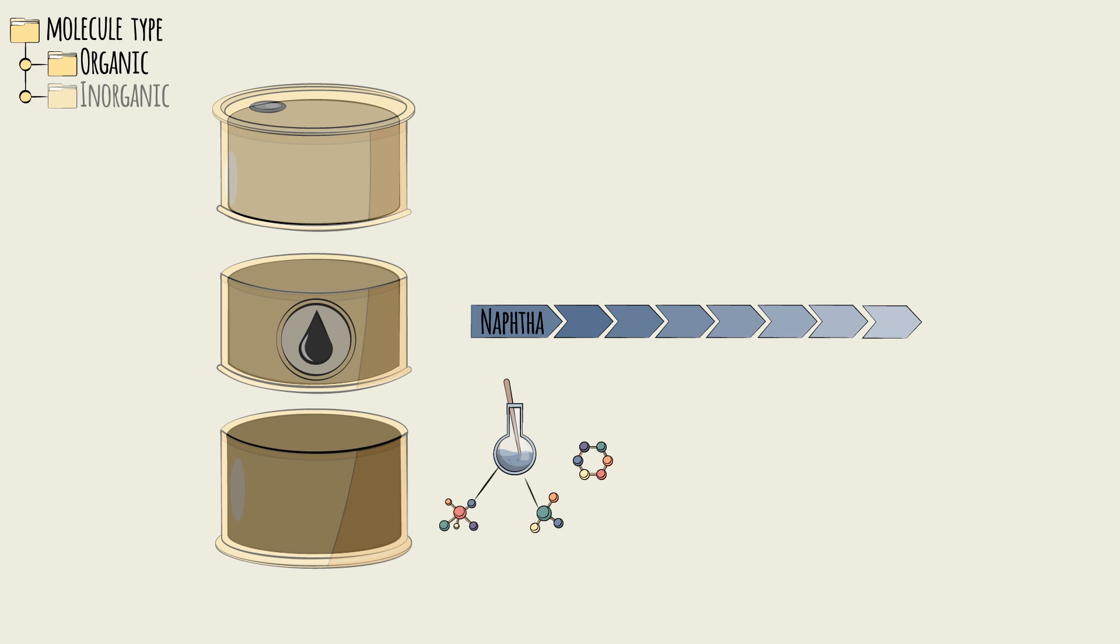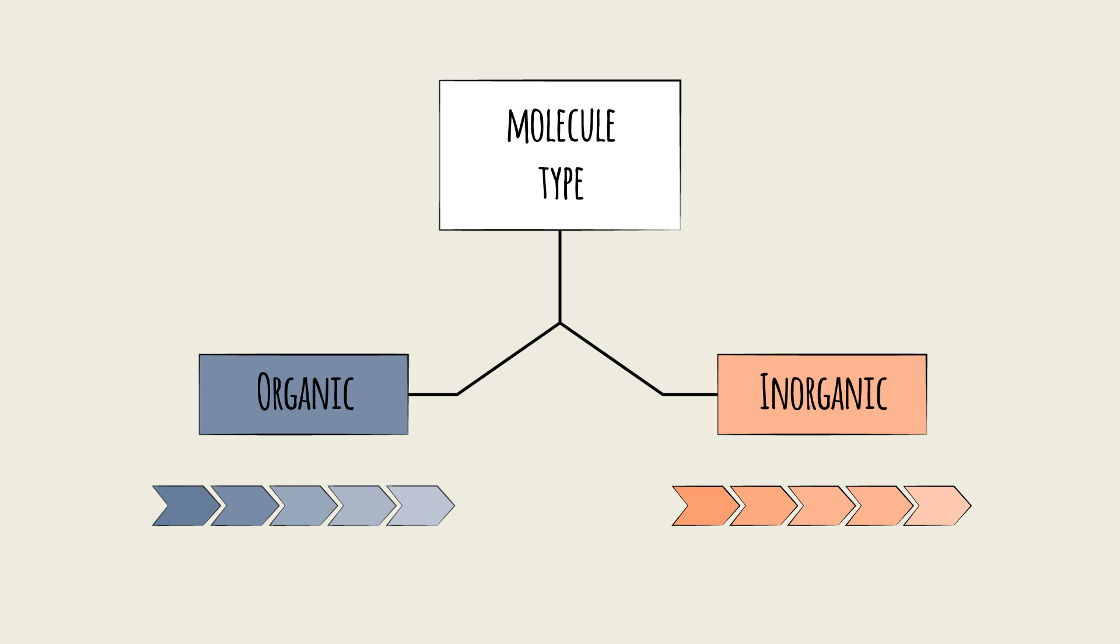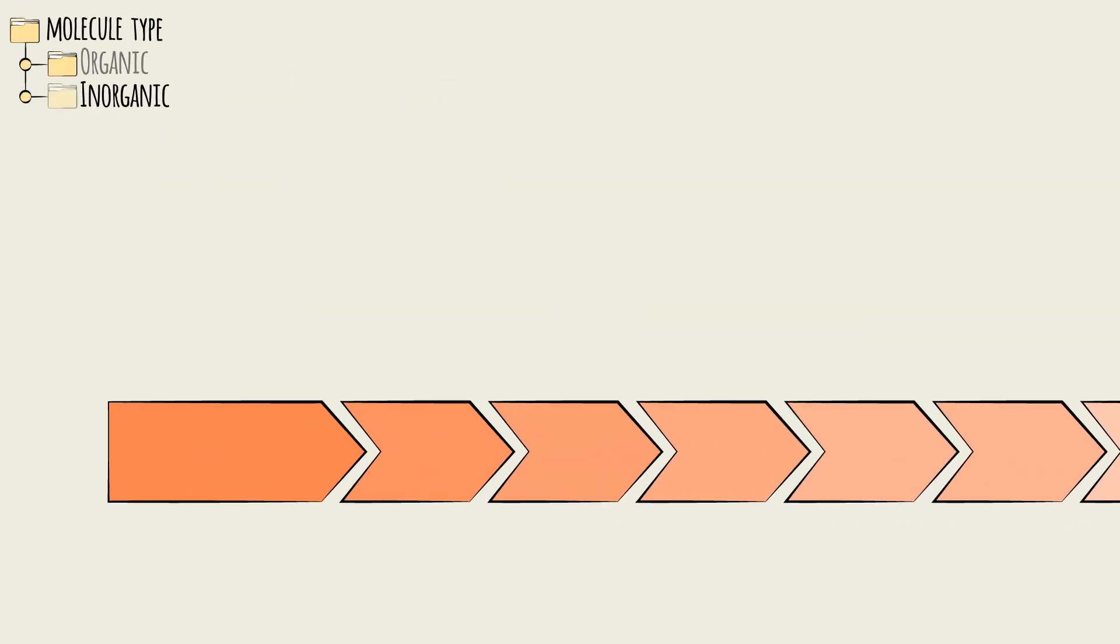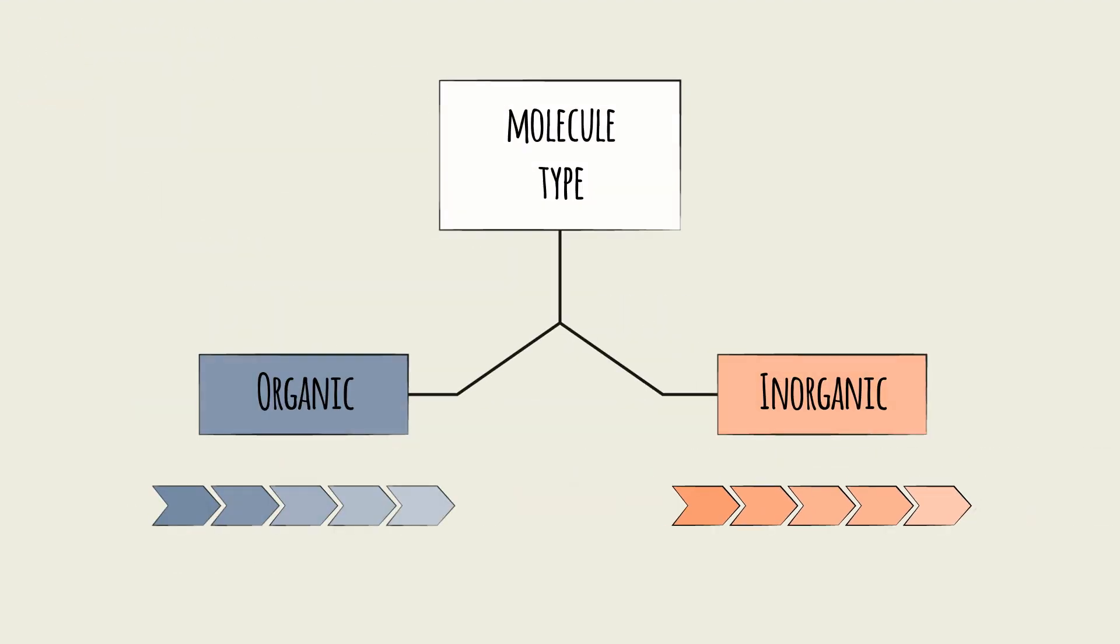The inorganic value chains work in a similar way, except that instead of oil they start with and center around metals or salts. One of the most important of these is chlorine. In many ways, the organic and inorganic distinction is actually more important at the value chain level than at the individual product level.